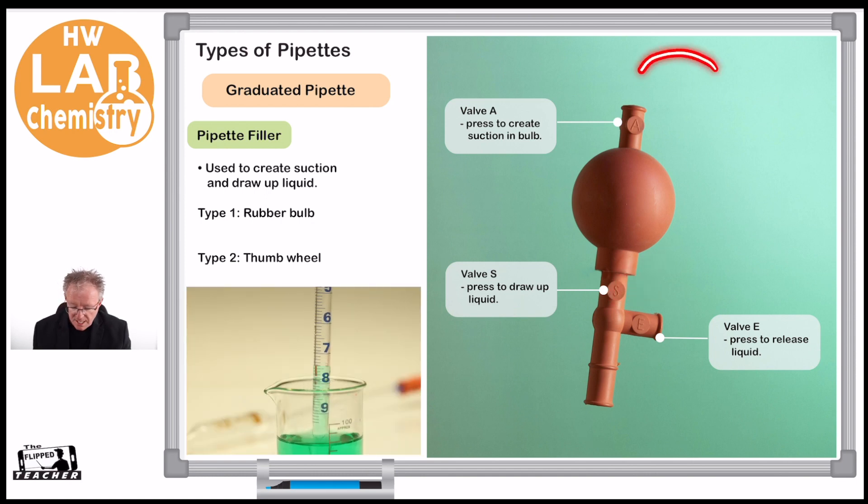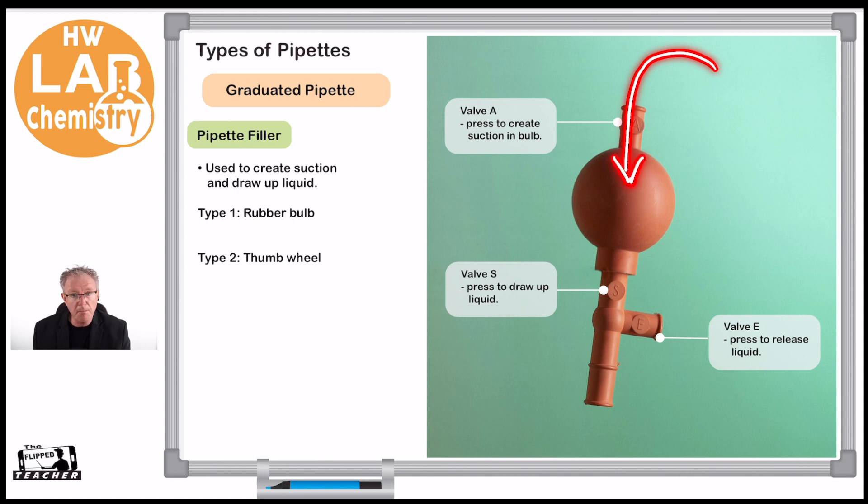When we press that, we're going to see air going into there, filling that bulb up. That's going to create a suction which will allow the water to go up. And then of course we have E, which is empty. That's going to allow air to go in and allow the liquid to go out of the pipette.